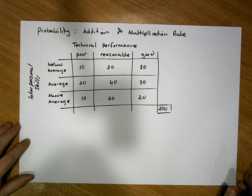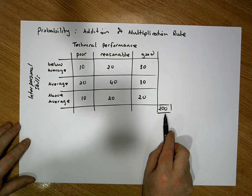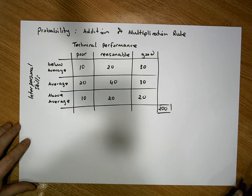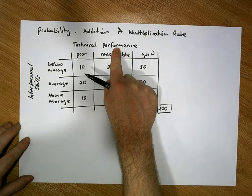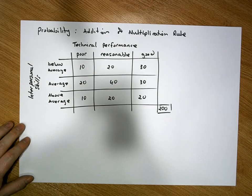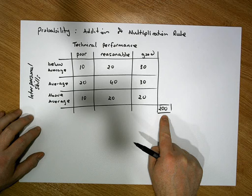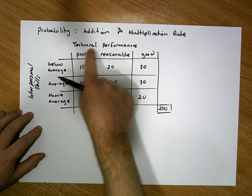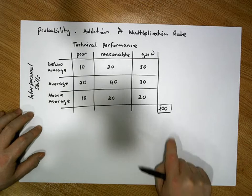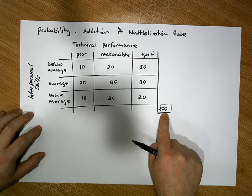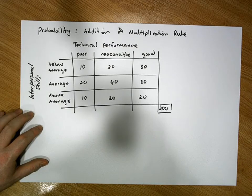The scenario we're going to consider is: we have 200 employees, and each employee was given two appraisals — one in relation to their technical performance on the job, and the other in relation to their interpersonal skills. An employee could be categorized into one of three categories for technical performance: poor, reasonable, or good; and for interpersonal skills: below average, average, or above average.